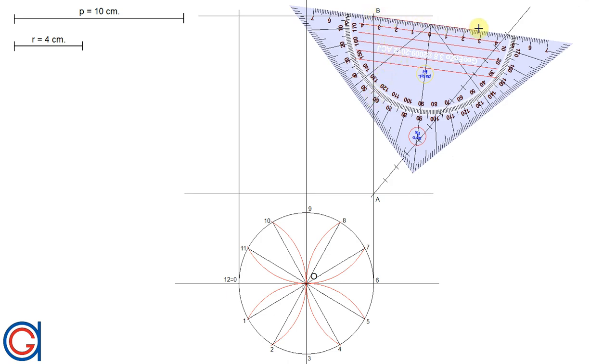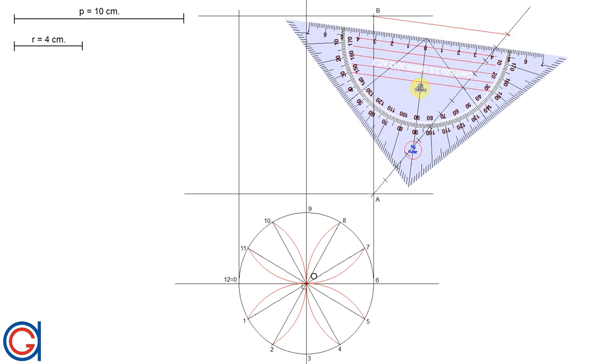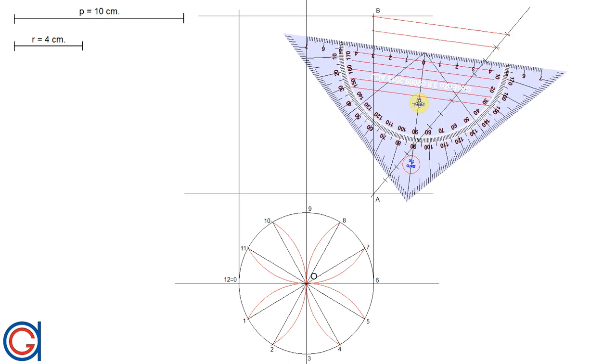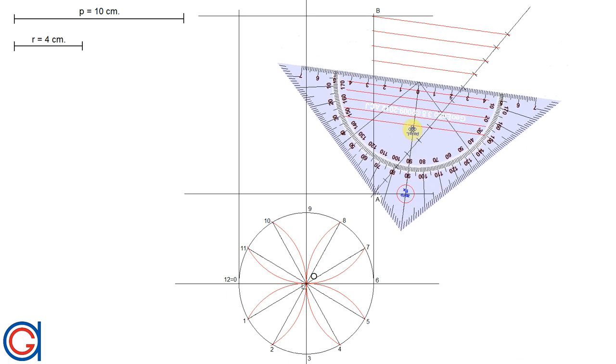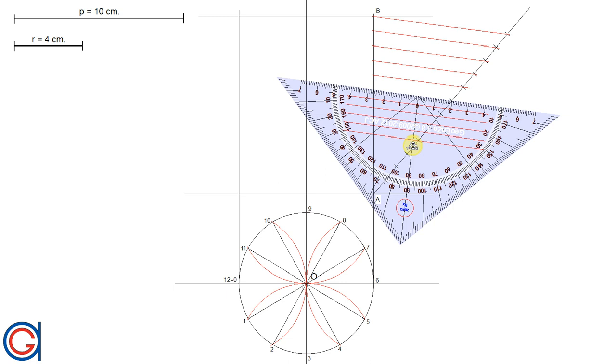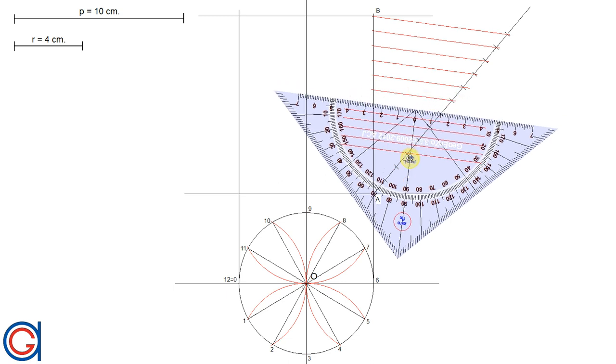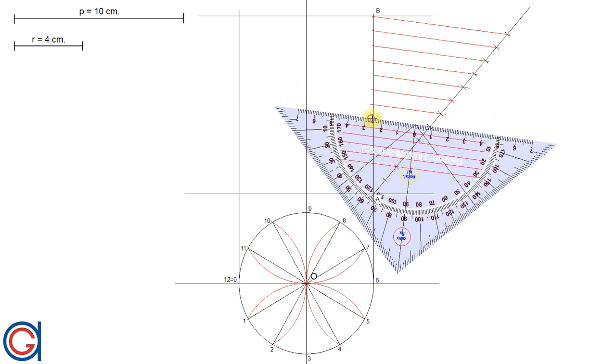Now we are going to join the last division on the line to point B. From now on, we have to draw parallel lines to this line, passing through all the divisions, as seen here with red lines.